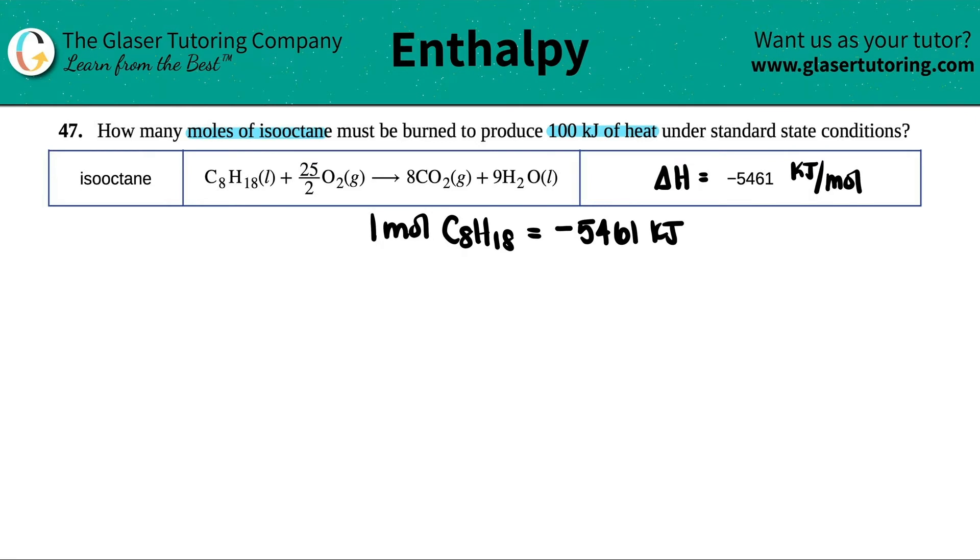Now we want to know how many moles of isooctane are going to be produced from 100 kilojoules of heat. So I just want to take my kilojoules and go to moles. This looks like a conversion to me.